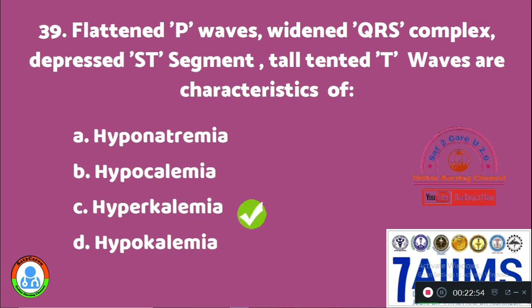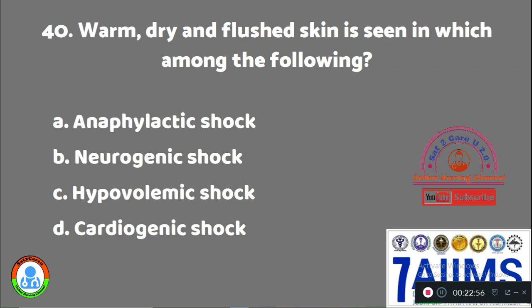Question 40: Warm, dry, and flushed skin is seen in which of the following? Option A: anaphylactic shock. Option B: neurogenic shock. Option C: hypovolemic shock. Option D: cardiogenic shock. The right answer is Option B, neurogenic shock.